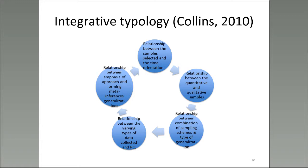You consider the relationship between varying types of data collected and the research question, and the relationship between the emphasis of the approach — is it approximately equal, drawing conclusions from both and treating them of equal importance, or is there a preference given to one versus the other based on the parameters of the particular design?